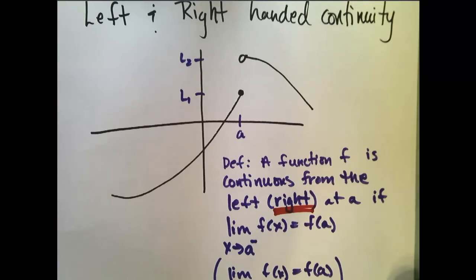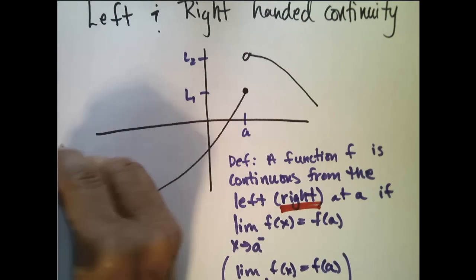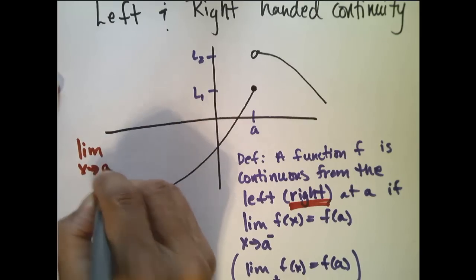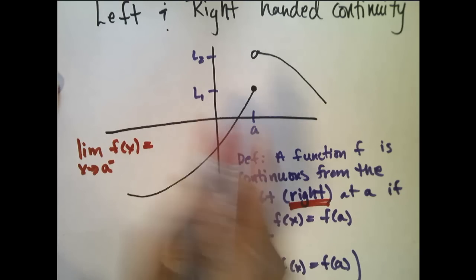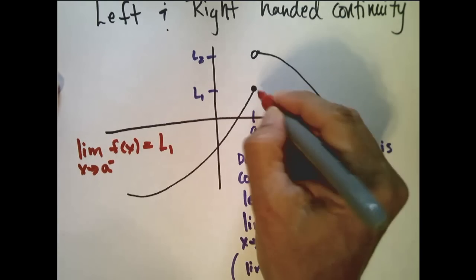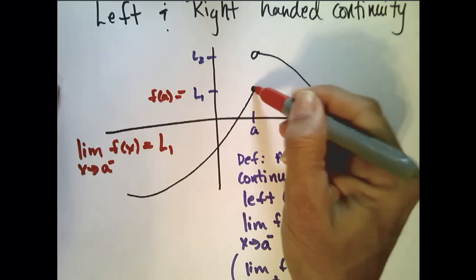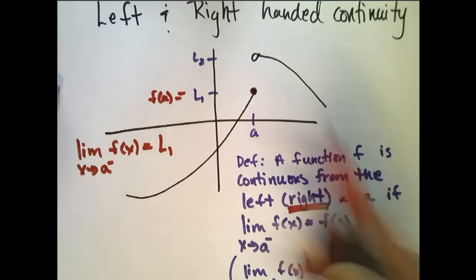Okay, so if we look at the graph here, the limit as x approaches a from the left of f of x equals l1, which is also equal to f of a. My function at a is also l1. So my function is continuous from the left.